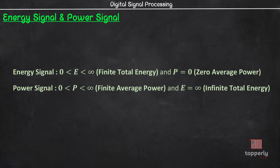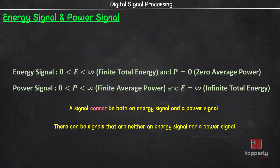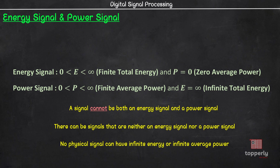Please note that a signal cannot be both an energy signal and a power signal — if it is one, it cannot be the other. However, there are signals that are neither an energy signal nor a power signal. Also keep in mind that no physical signal can have infinite energy or infinite average power, but in signal analysis, according to strict mathematical definitions, signals such as sinusoidals have infinite energy. Therefore, periodic signals and random signals are viewed as power signals, whereas deterministic and non-periodic signals are usually viewed as energy signals. Every signal observed in real life is an energy signal, as it is impossible to generate infinite energy signals in nature.